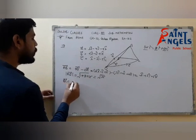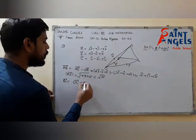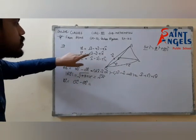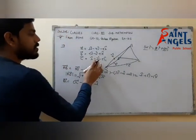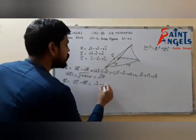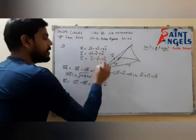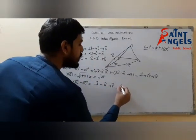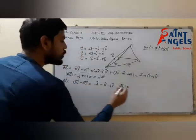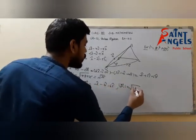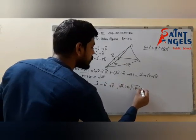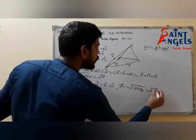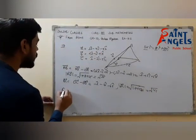Now find side BC: BC vector = OC minus OB = vector C minus vector B = (I minus 2I) minus I-cap, (minus 3J plus J) minus 2J-cap, (minus 5K minus K) minus 6K-cap. So magnitude of BC = under root of (1 + 4 + 36) = under root 41.